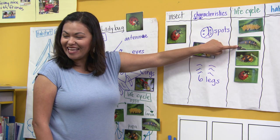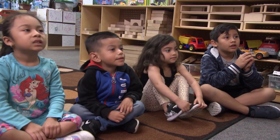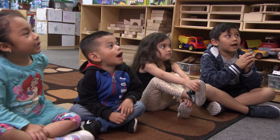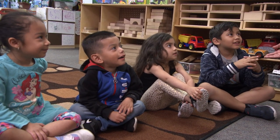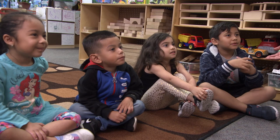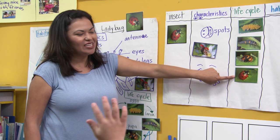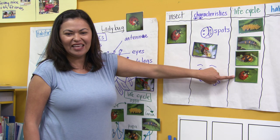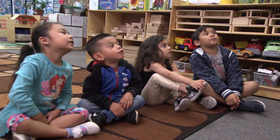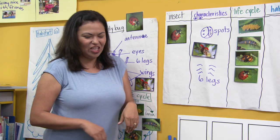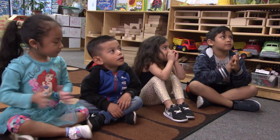The second stage is the larva. The third stage is the — pupa. Pupa. Let's say it together: pupa. And the fourth stage is — the adult. Adult ladybug. Excellent. Give yourselves a round of applause. We really worked hard today.